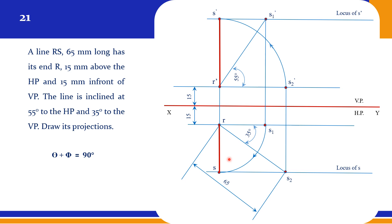We are proceeding from step 1 to step 5 as usual. The only difference between this problem and others is that we are getting a single projector — the final front view and top view are obtained on a single projector. This is problem 21, and we will see a few more types of problems also.